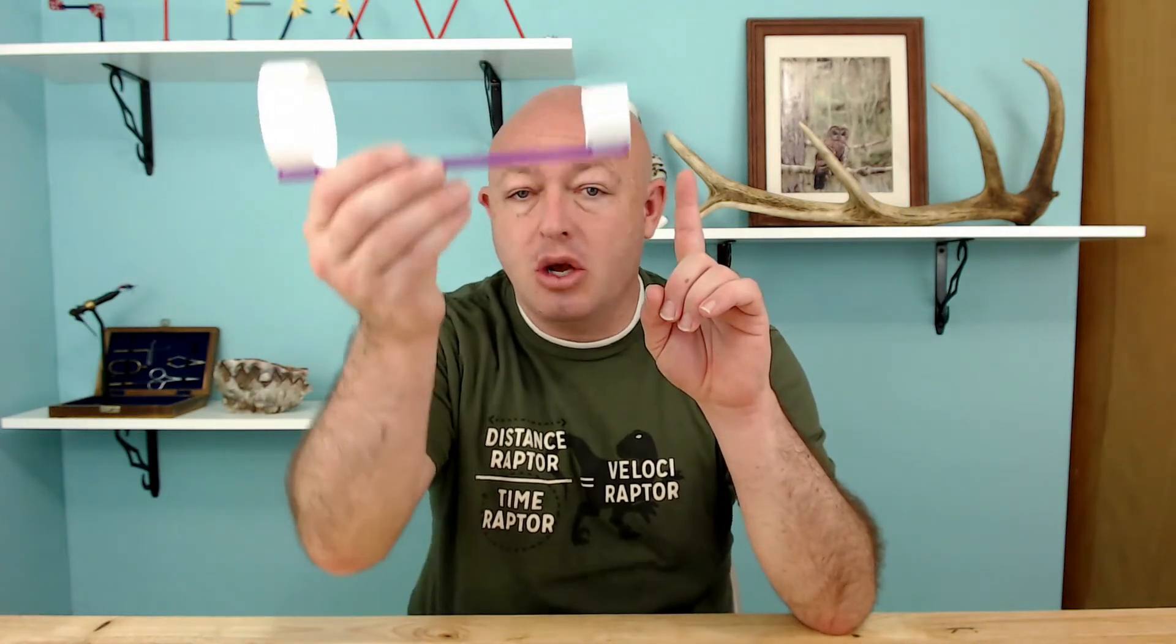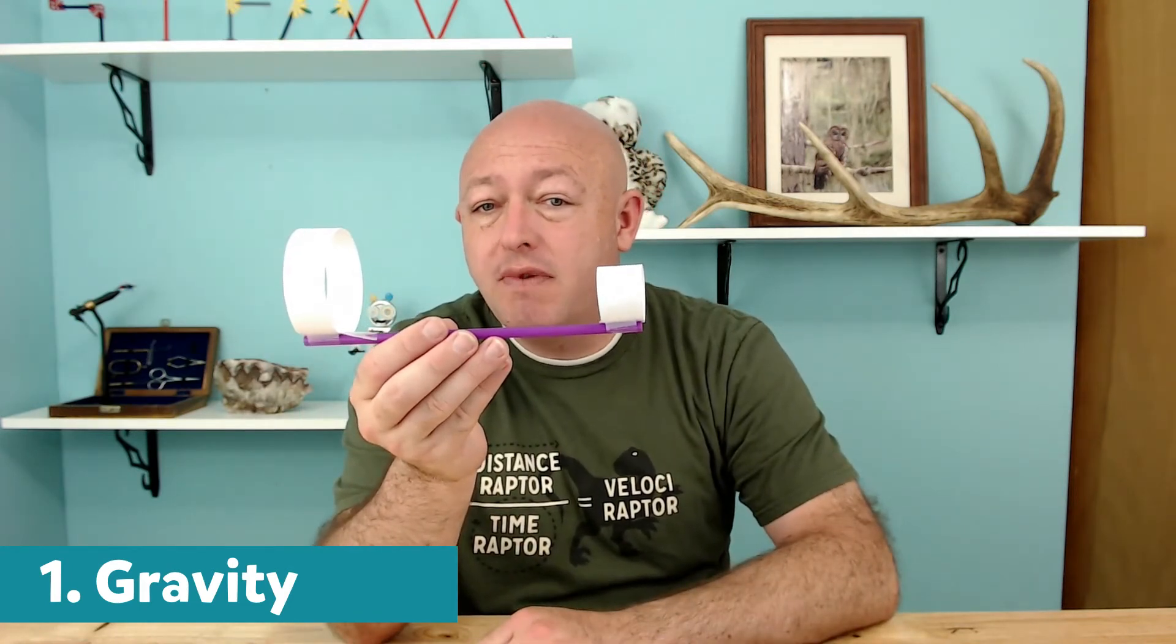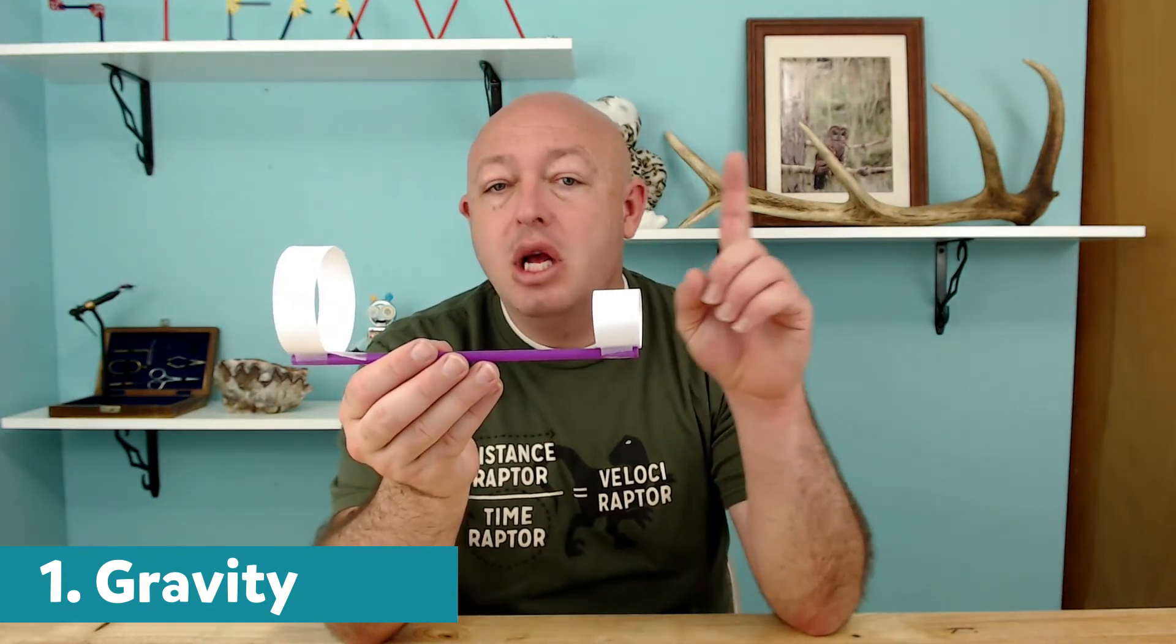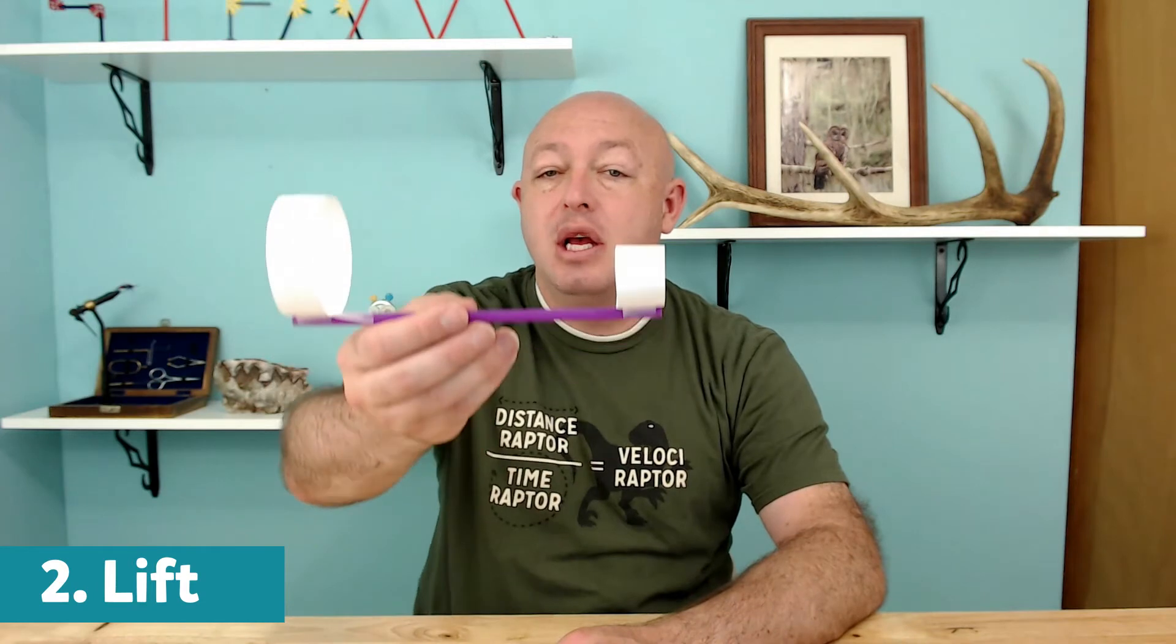Now for a little information on how things fly. Because these things, they don't look like they would fly, right? There are four forces that affect something that flies. First one: what happens when you drop something? Gravity. It's missing two of the other forces, so gravity takes over and will make something fall to the ground. It pulls things down towards the earth.